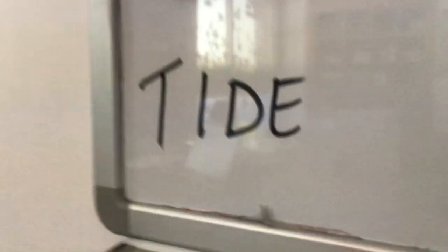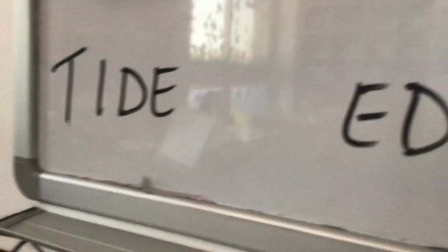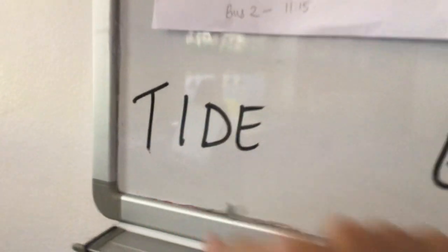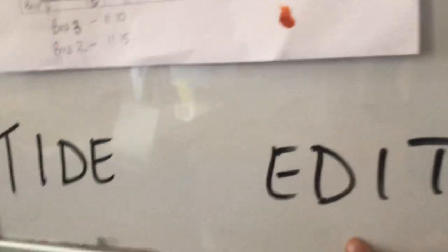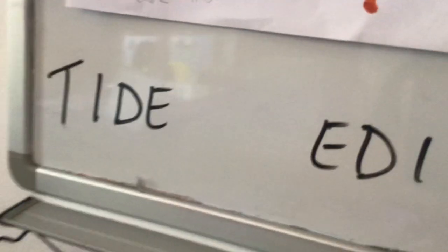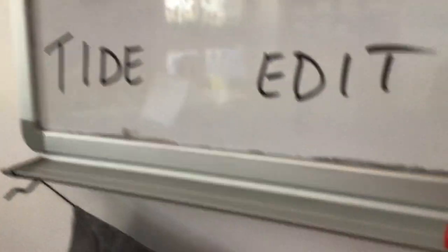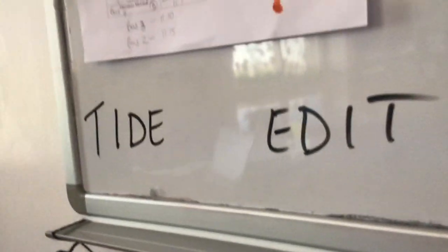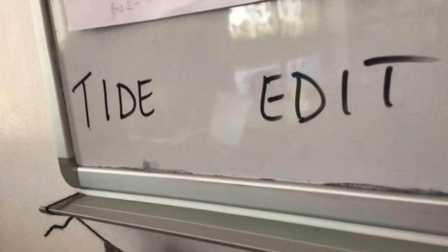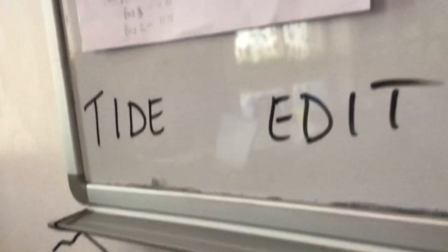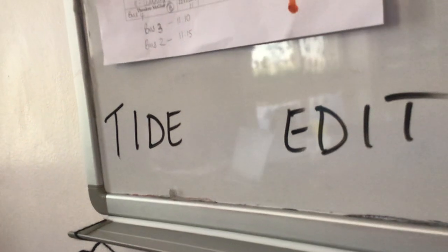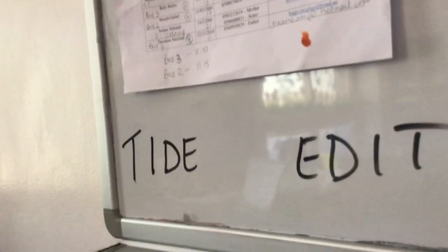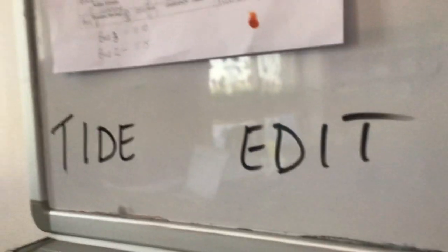Did you know that TIE is EDIT backwards? The T becomes the first letter, the I becomes the second letter from the third letter in EDIT. T and then I become the first and the second letters, becoming the third and the fourth letters here, while ED becomes three and four here. This is how TIE is EDIT backwards.